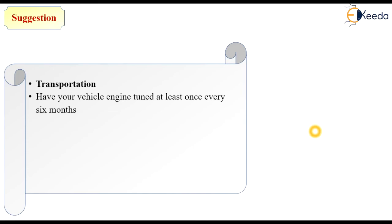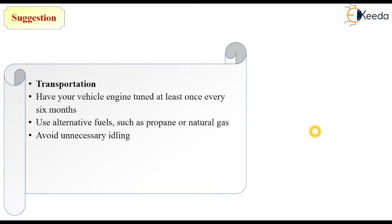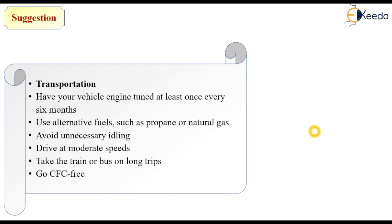An important source of acid rain is vehicular emissions. Transportation suggestions include: check heavy vehicle engines at least once every six months; use alternative fuels such as propane or natural gas instead of other artificial gases; avoid unnecessary idling; drive at moderate speeds; take the train or bus on long trips; and go chlorofluorocarbon-free. These are common practices to adopt in daily life.